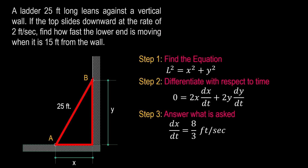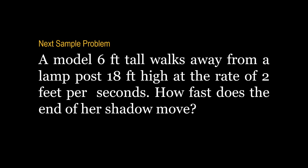So those are the three simple easy steps in solving time rates problems. Step one: find the equation — and remember, what is being asked must always be included. Step two: differentiate with respect to time. Step three: answer what is asked in the problem, which requires you to recognize what is being asked. On the next video, we'll solve another sample problem.